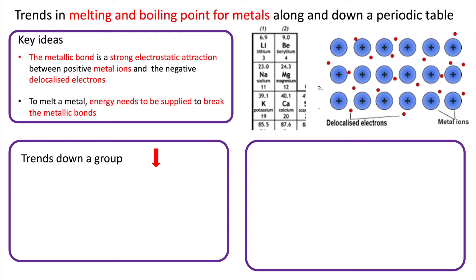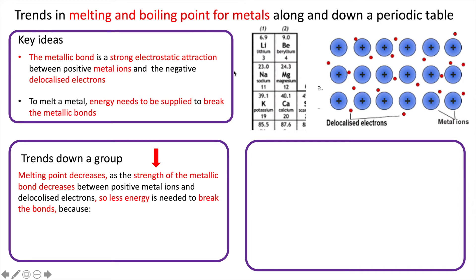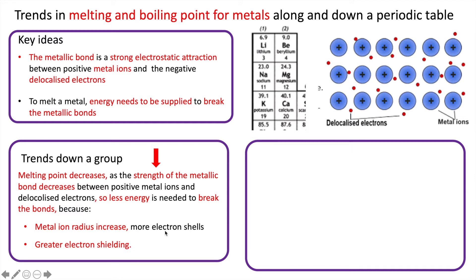To explain this clearly in bullet points for an exam: the melting point decreases as the strength of the metallic bond decreases between the positive metal ions and the delocalized electrons, so less energy is needed to break the bonds. The metallic bond decreases because the metal ion radius increases — there are more electron shells — and secondly there is greater electron shielding.